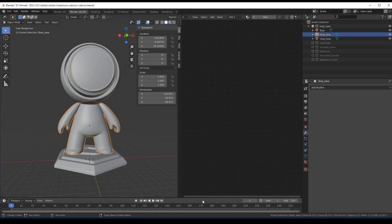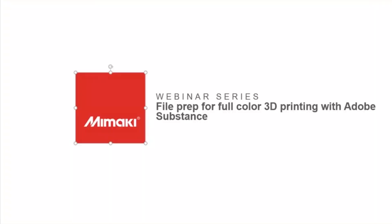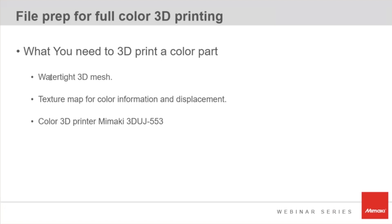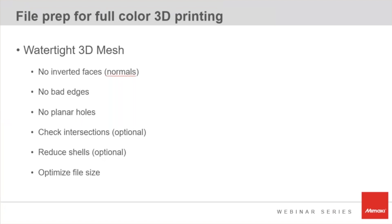This is the base model — there is no color on it. So what do we need to get to a final printed piece? Basically we need: a watertight mesh, a texture map for color information and displacement, and a colored 3D printer — which is going to be the Mamaki 3D UJ 553. A watertight mesh is basically a 3D mesh that in theory you should be able to pour water inside of and the water will not escape. It's very important to have watertight meshes in 3D printing.